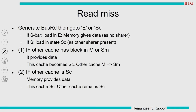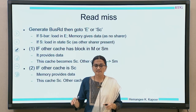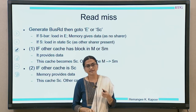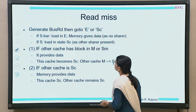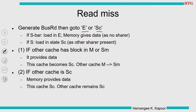If another cache has the block in M or SM, that cache provides the data. If all other caches are in SC, memory is up to date so memory gives the data. So: go to E or SC depending on the wired-OR signal. If a cache has the block in M, it provides the data. If everybody is in SC, memory gives the data.